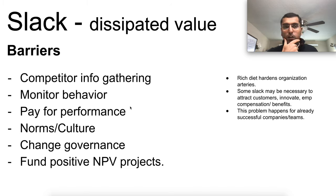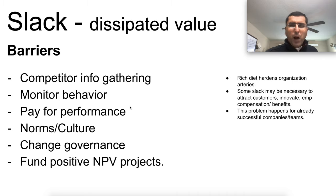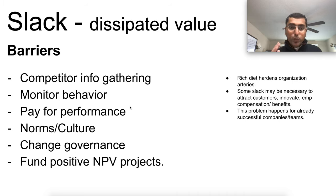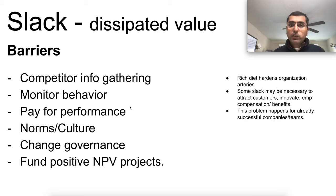Gather data around competition, monitor behavior, incentivize people for performance, and build a culture of operational excellence — a norm of what's acceptable and what's not. This is much more powerful than monetary incentives or punitive measures. Governance also matters: having the right board of directors, supporting activist investors, and caring for minority shareholders are good governance mechanisms to ensure no slack builds up, and to fix it if it does.